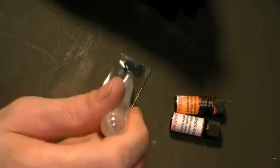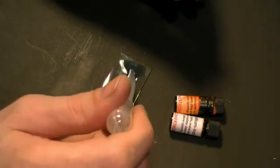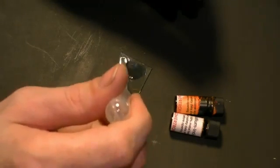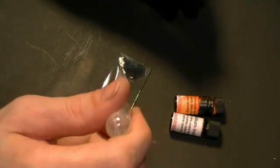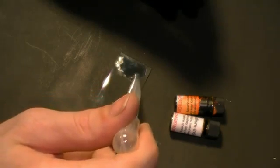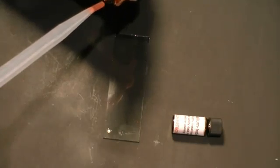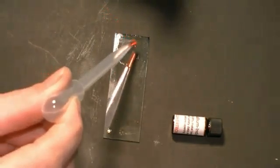First, I add the hole transport layer to the conductive side of the glass. This will bring holes to the emissive layer. I let it dry. Next, I add a couple drops of the ruthenium emissive layer.